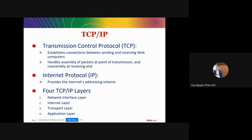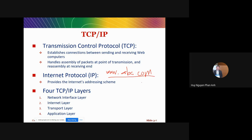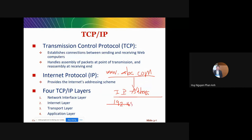For example, a website like abc.com — we call that the domain name. Behind that domain name there is an IP address. The IP address is like the address of your home — your home has an address, and websites also have an address. For example, it might look something like this set of numbers — that's what we call the IP address.